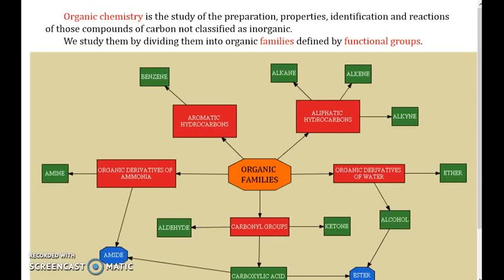Welcome to our first day of organic chemistry. In grade 11 and most of grade 12 chemistry, all we've learned about so far is inorganic chemistry. An example of inorganic chemistry would be sodium chloride. Inorganic chemistry involves taking a cation — in this case sodium — and an anion — which in this case is chlorine — and bringing them together. Their positive and negative charges through ionic bonding result in an ionic compound. We name those with inorganic rules.